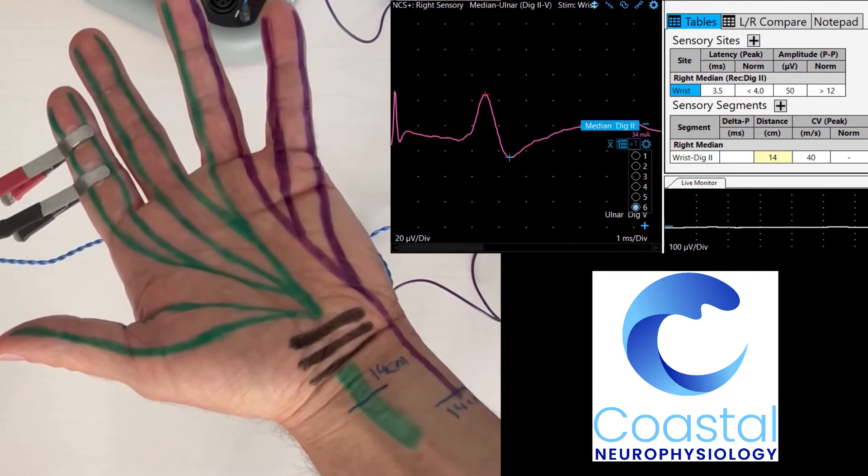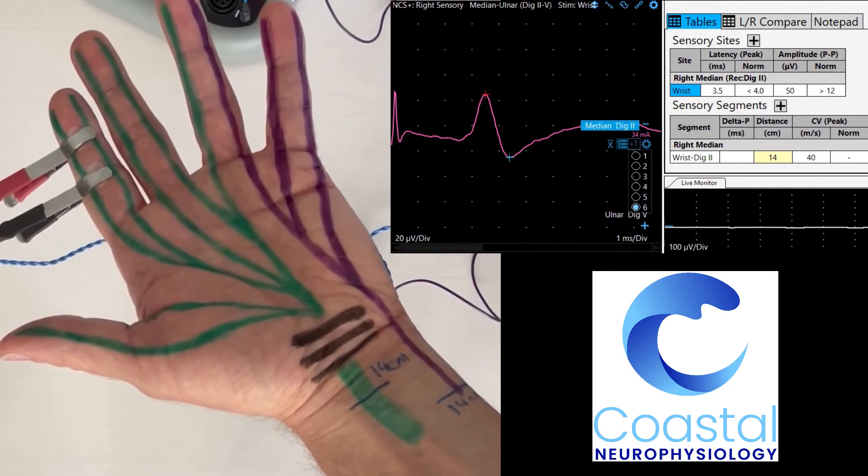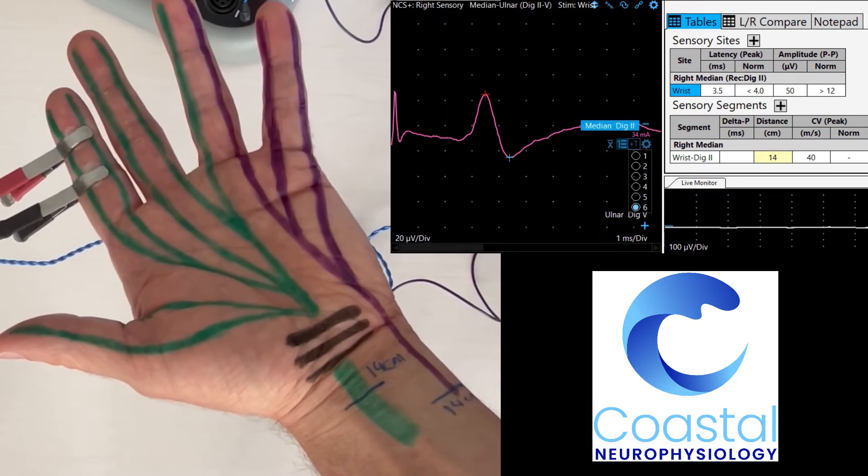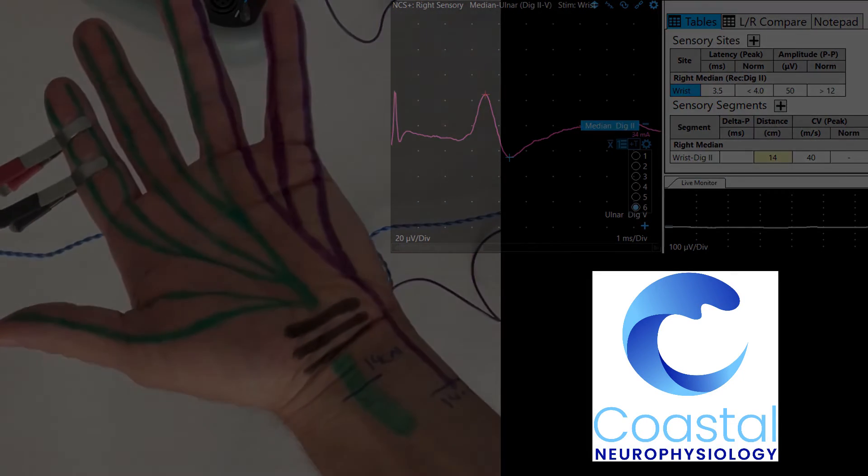So that signal, even though electrically very small, is technically normal for this nerve. The time it took the signal to get from my wrist to my finger, 3.5 milliseconds, was also normal.